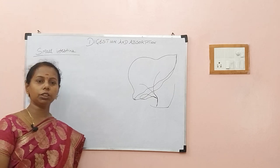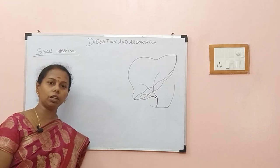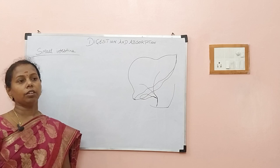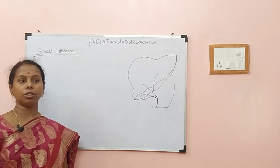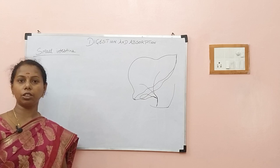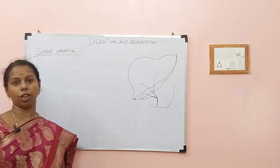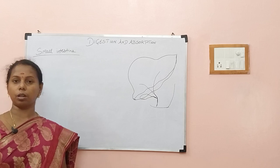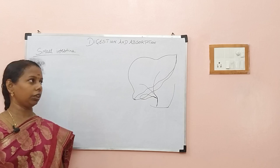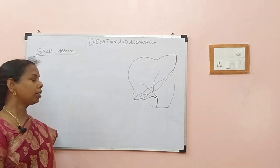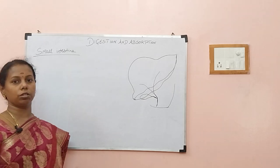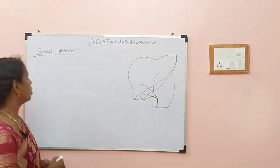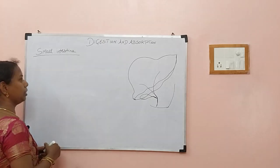Another question: when we eat only almond or peanut, where does digestion begin? Of course, it begins in the stomach only. So, after the stomach, we are now moving to the small intestine.